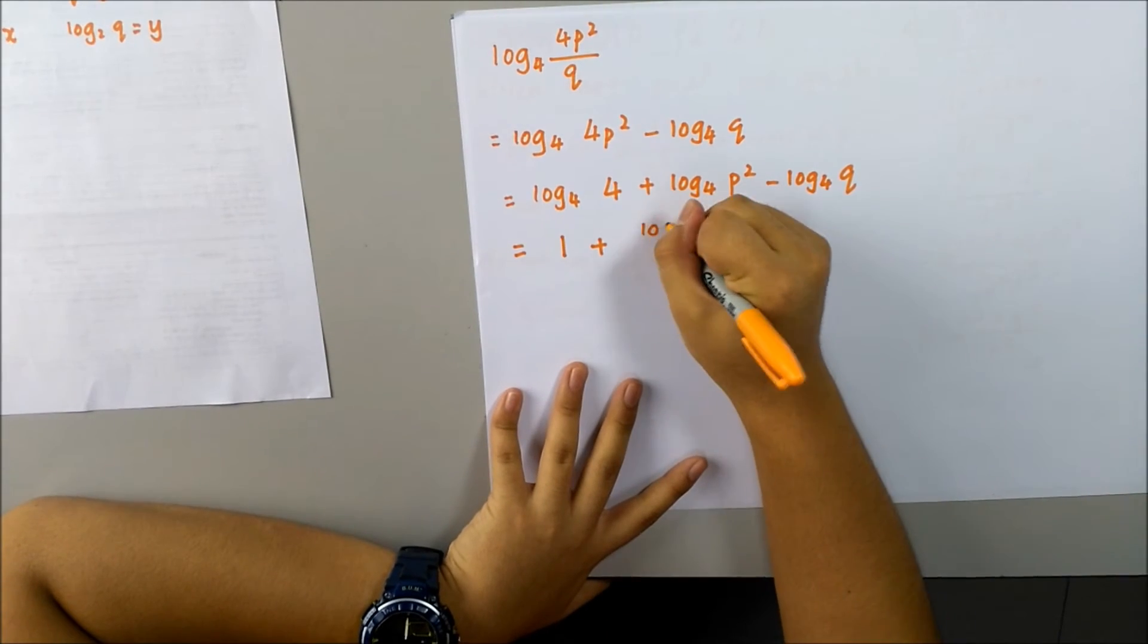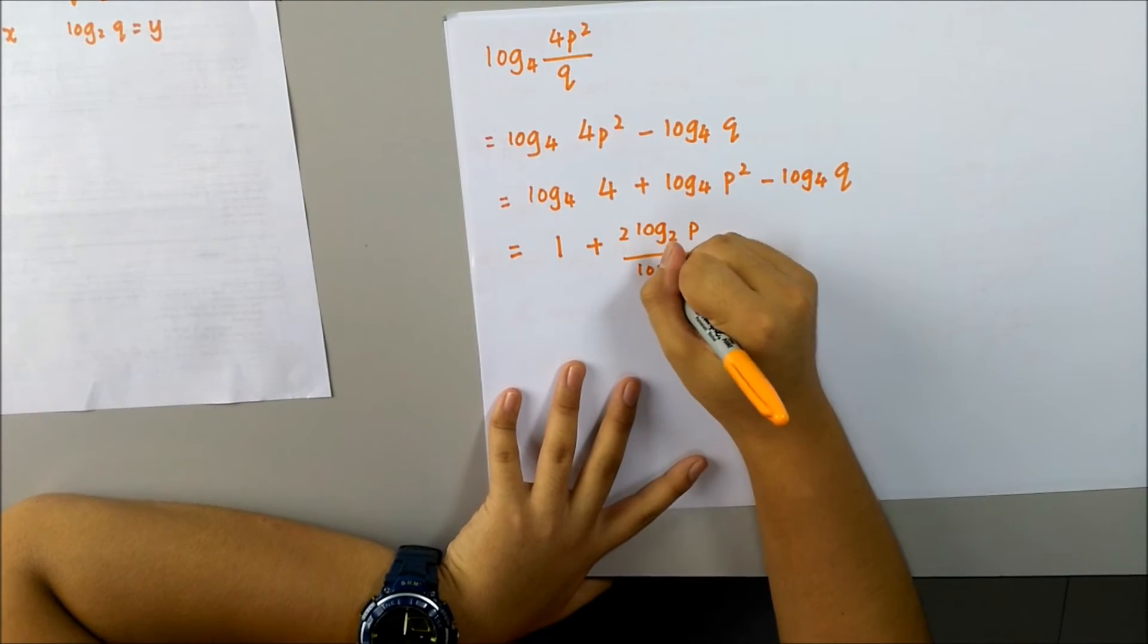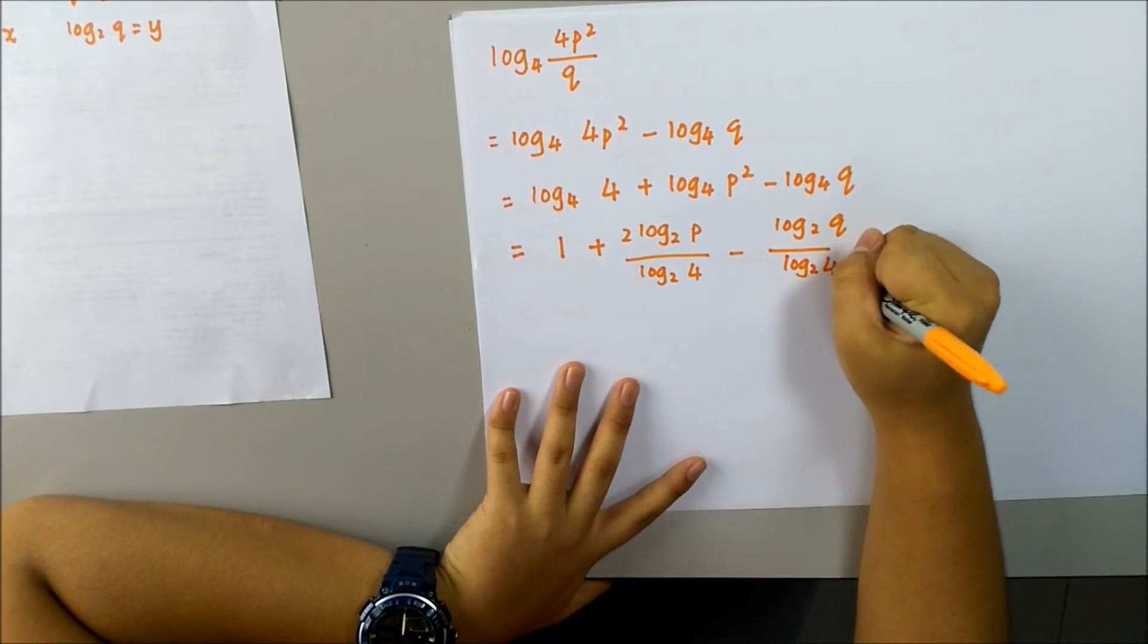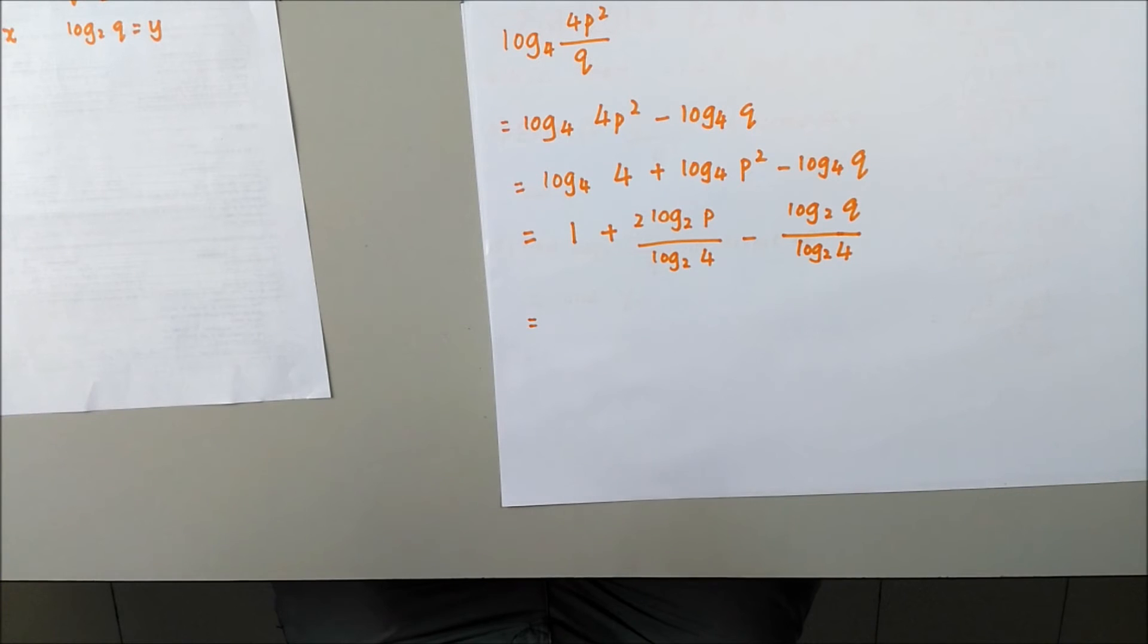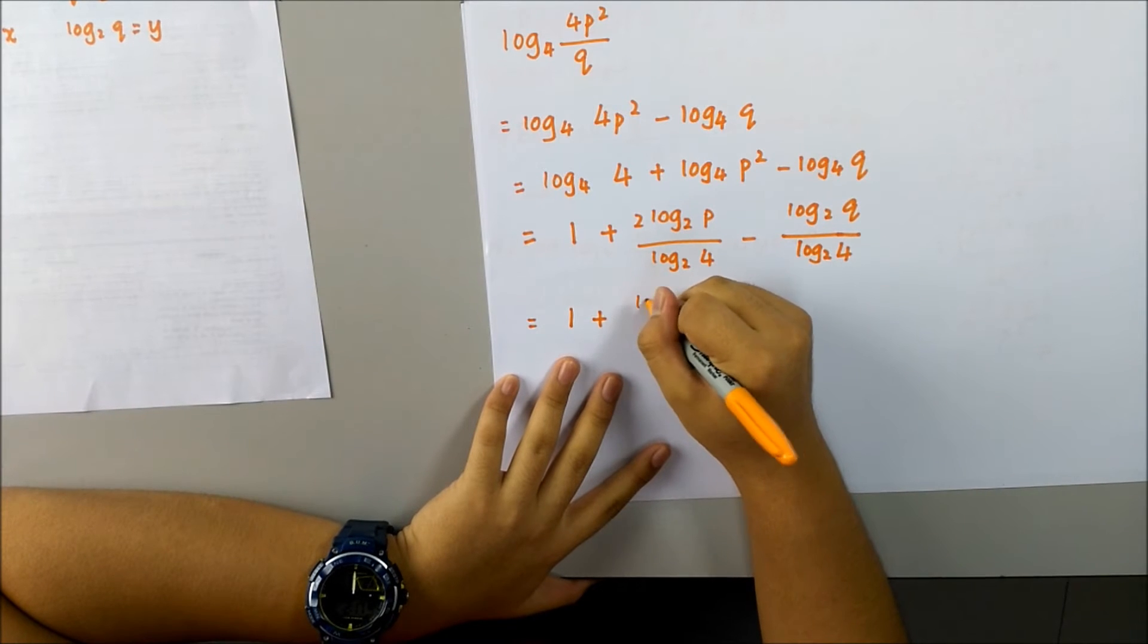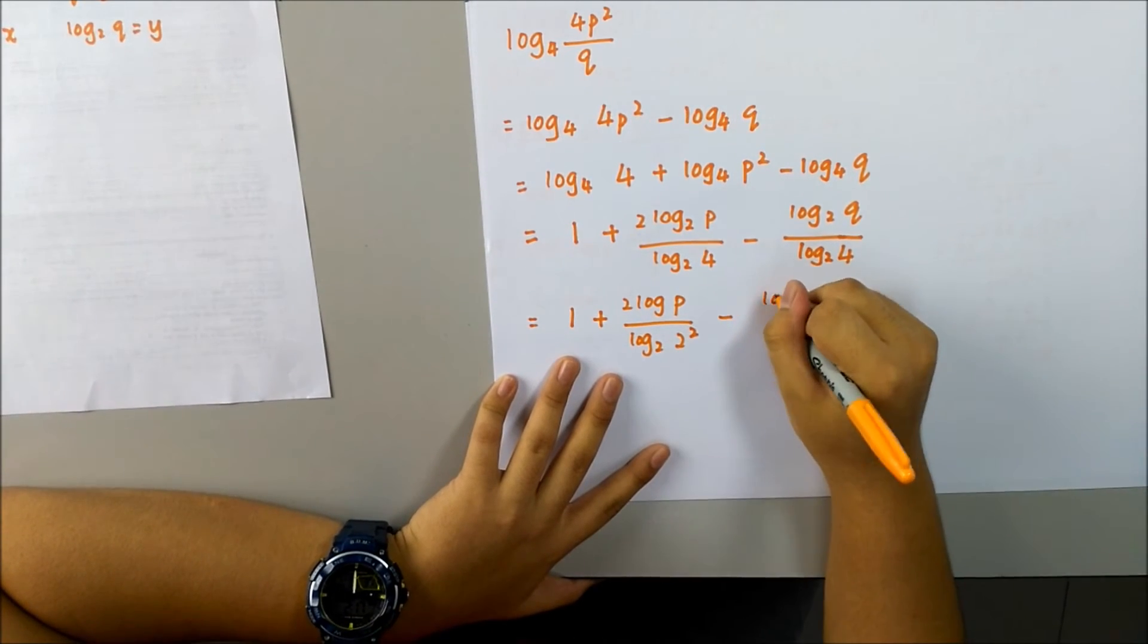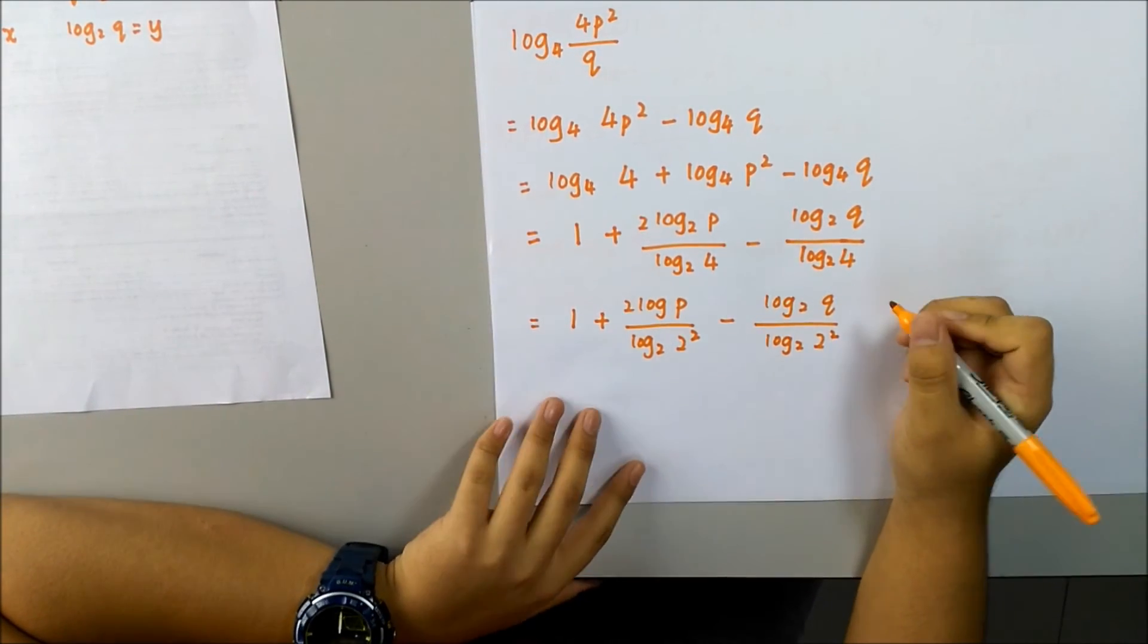Change it. Log 2 of p over log 2 of 4 minus log 2 of q over log 2 of 4. We know that log 2 of 4, the 4 is the number 2 squared, is equal to 2 squared. So log 2 of 2 squared, 2 squared is equal to 4. The same thing applies here, 2 squared.